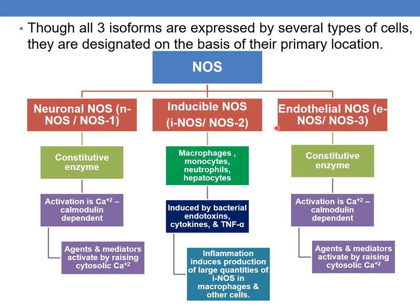Neuronal NOS and endothelial NOS are constitutive enzymes synthesized at a relatively low uniform rate. Inducible NOS (iNOS or NOS2) is present in macrophages, monocytes, neutrophils, and hepatocytes, and is induced by bacterial endotoxins, cytotoxins, tumor necrosis factor-alpha, interleukins, and interferons. Inducible NOS is very active, and inflammation induces the production of large quantities of iNOS in macrophages and other cells.